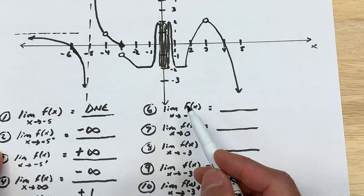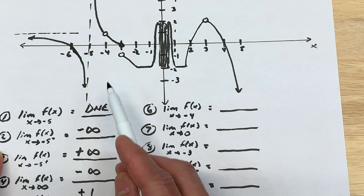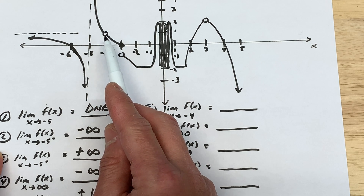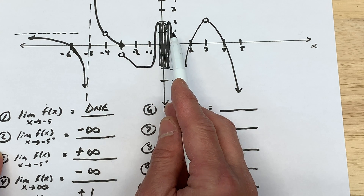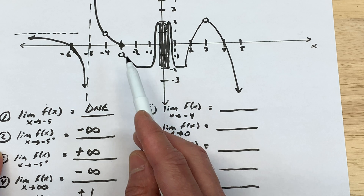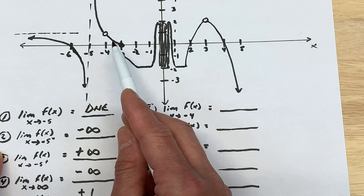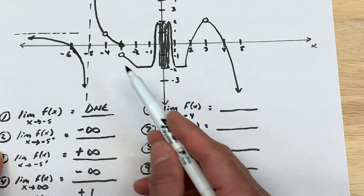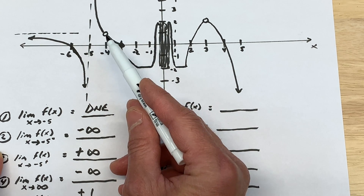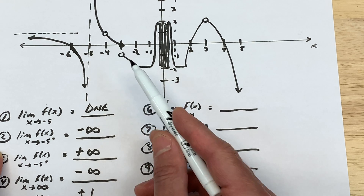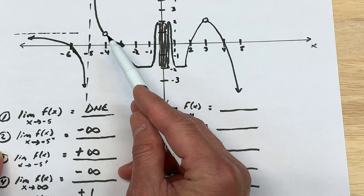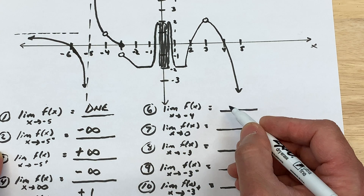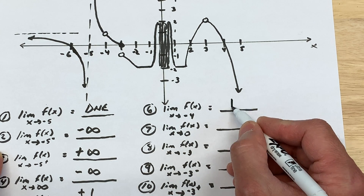For number six: the limit as x approaches negative 4 of the function. Approaching from the left, you're getting closer to an open circle at a y value of 1. Approaching from the right, you're also approaching that same hole at y equals 1. When talking about limits, you're getting closer and closer but don't actually reach negative 4. Since both sides approach the same y value of positive 1, that's our limit.